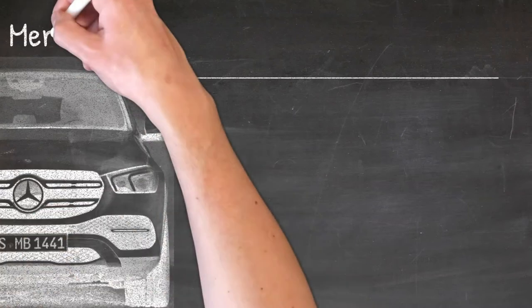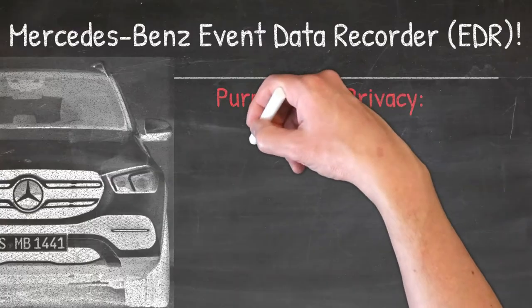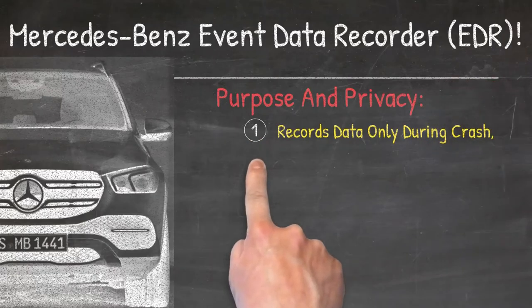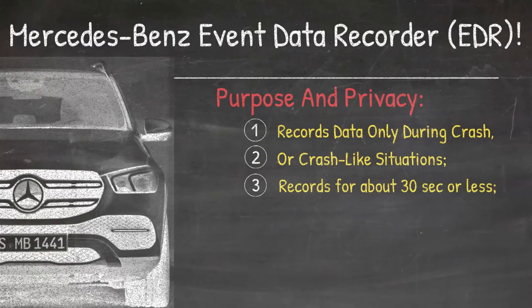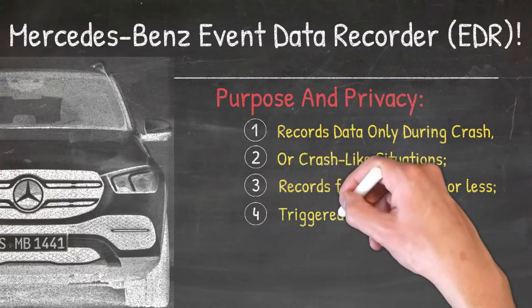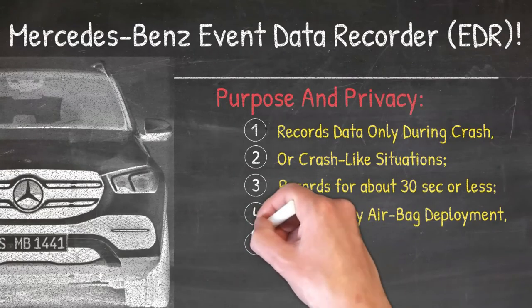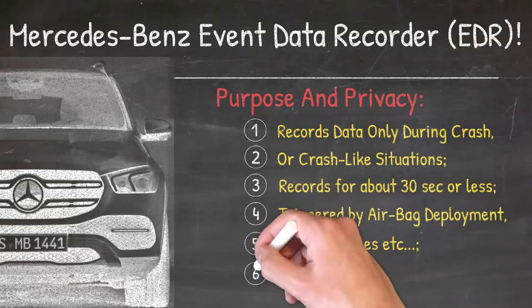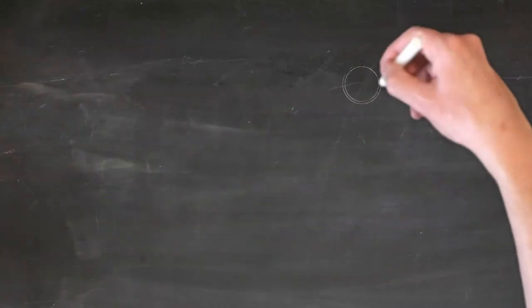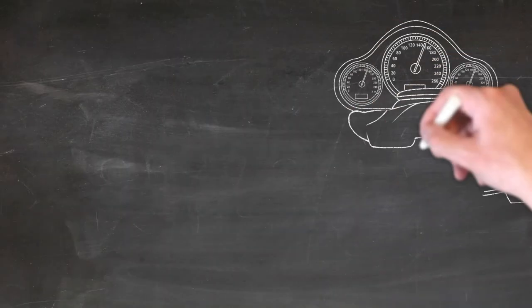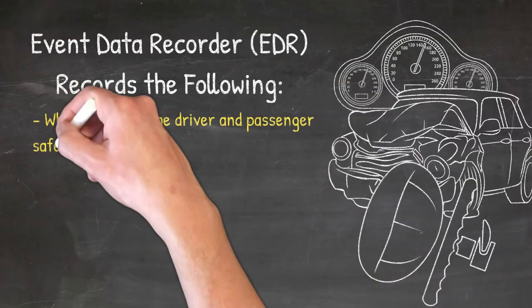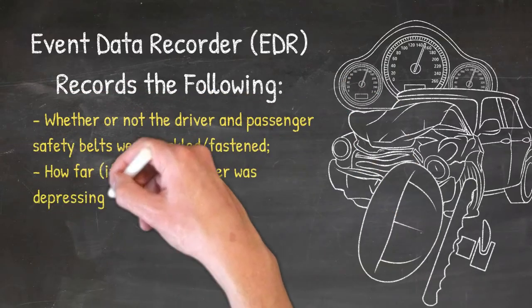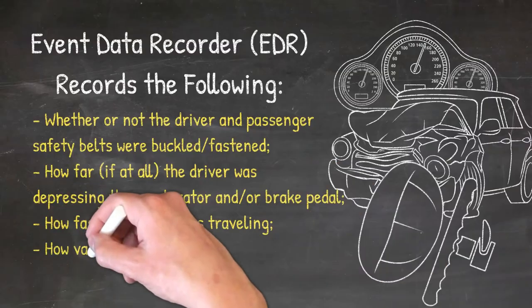Now let's take a look at privacy, because a lot of people say Big Brother is watching every move I make. EDR records data only during an actual crash or crash-like situations — it does not record at all other times, and records for about 30 seconds or less. It has to be triggered by something significant, like airbag deployment, sudden braking, or road obstacles. No personal information is recorded, so EDR doesn't know your name, age, location, etc. The Event Data Recorder records the following: whether the driver and passenger safety belts were buckled, how fast the driver was going, whether all pedals were depressed, and how all other safety systems behaved.